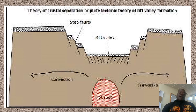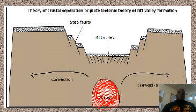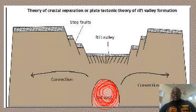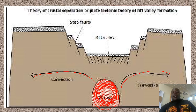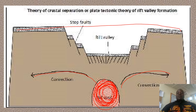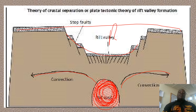So if you check here, we have a hot spot — others may call it a chamber of magma or the mantle, but let us call it a hot spot — which is very hot, with a lot of energy which produces these convection currents. And these convection currents put the whole block or crust under stress until it separates: one on the left, one on the right, and this upper part will become wide. It opens to form a rift valley.